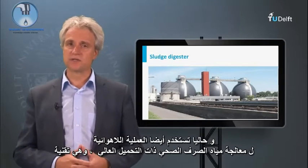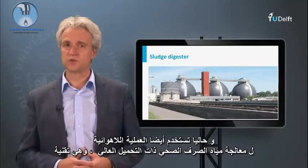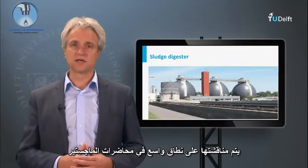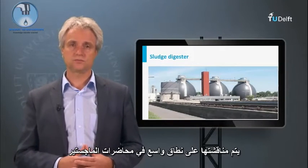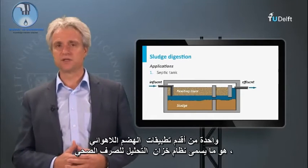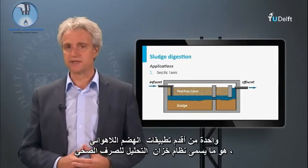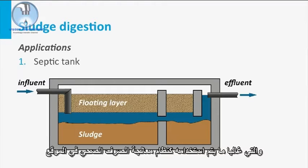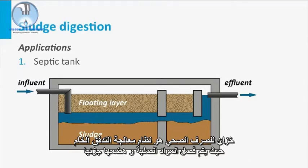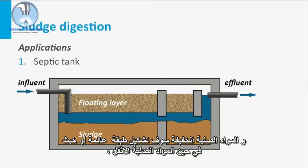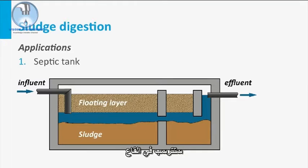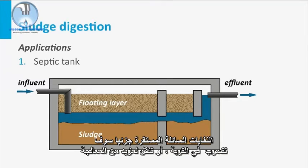The anaerobic process is presently also used for high-rate wastewater treatment, a technology extensively discussed in our master lectures. One of the oldest applications of anaerobic digestion is the so-called septic tank system, which is often used as an on-site sanitation system. A septic tank is a lateral flow treatment system in which solids are entrapped and partly digested. Light solids form a floating scum layer, whereas heavier solids settle to the bottom. The partly stabilized effluent is subsequently infiltrated in the soil or conveyed for further treatment.